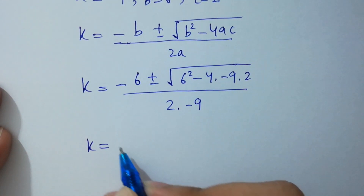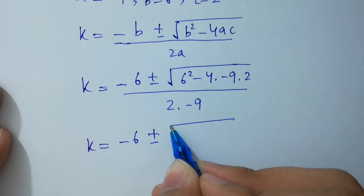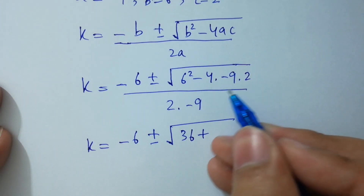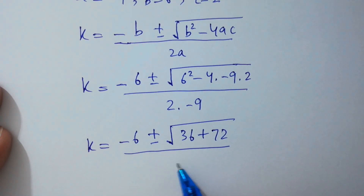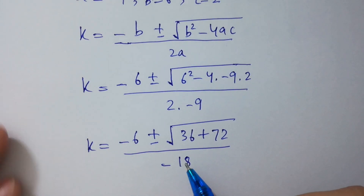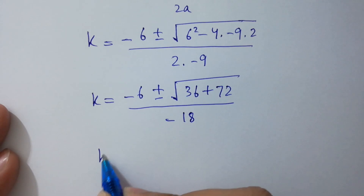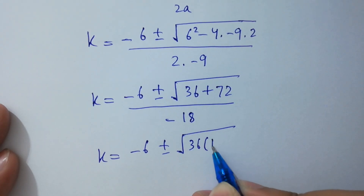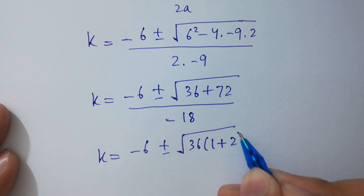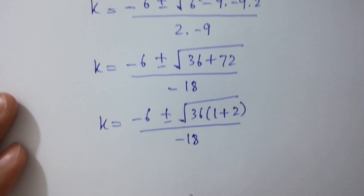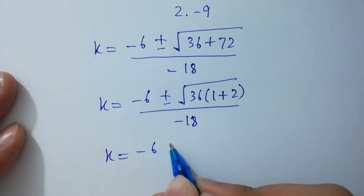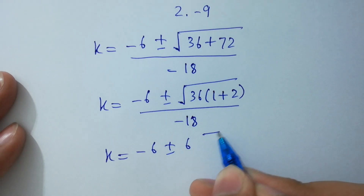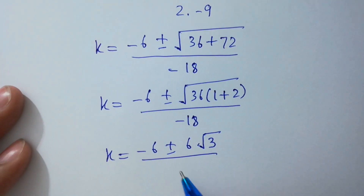k equals minus 6 plus or minus square root of 36 minus minus plus 4 times 2 is 8 times 9 is 72, over minus 18. k equals minus 6 plus or minus square root of 36 common: 1 plus 36 times 2 is 72, over minus 18. k equals minus 6 plus or minus square root of 36 times 3, and square root of 36 equals 6, square root of 2 plus 1 is 3, over minus 18.